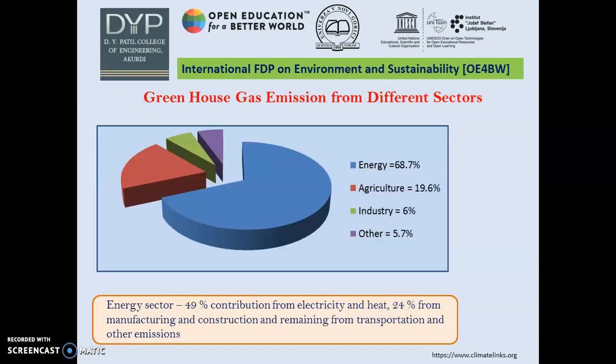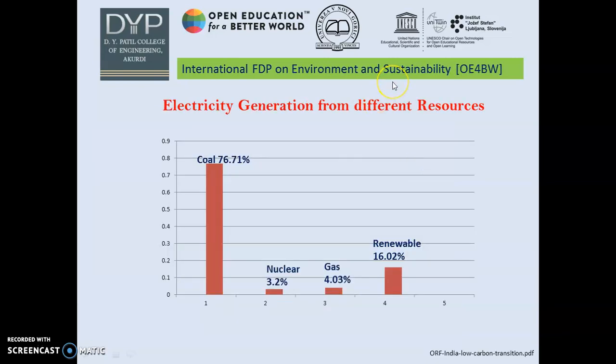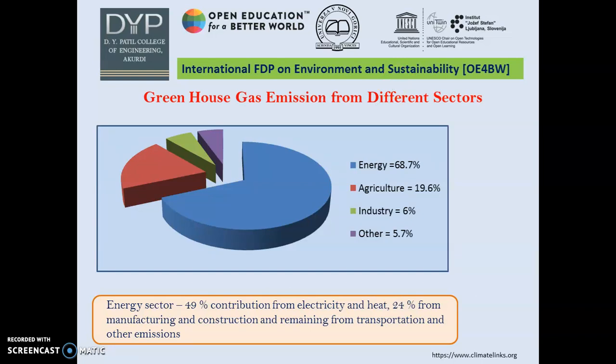In this video I am going to do calculations. Before that, we discuss what is the greenhouse gas emission from different sectors. The major contribution is from the energy sector at 68.7 percent, then agriculture, then industry, and then other. In industry and agriculture, we consider emissions apart from the energy sector, so don't be confused — industry is 6 percent here because all energy-related emissions are counted separately.